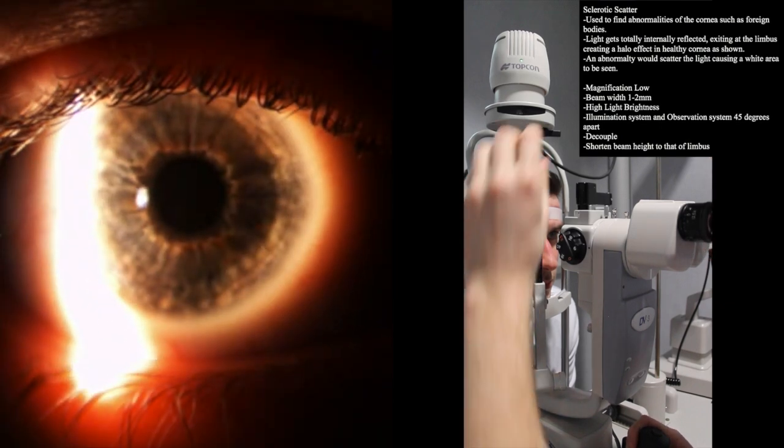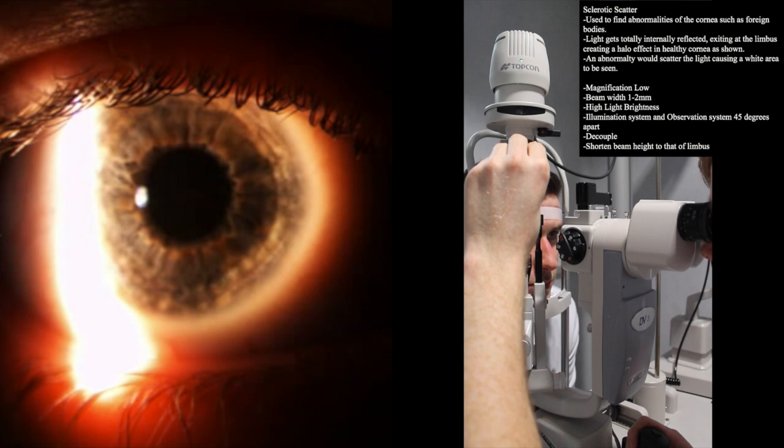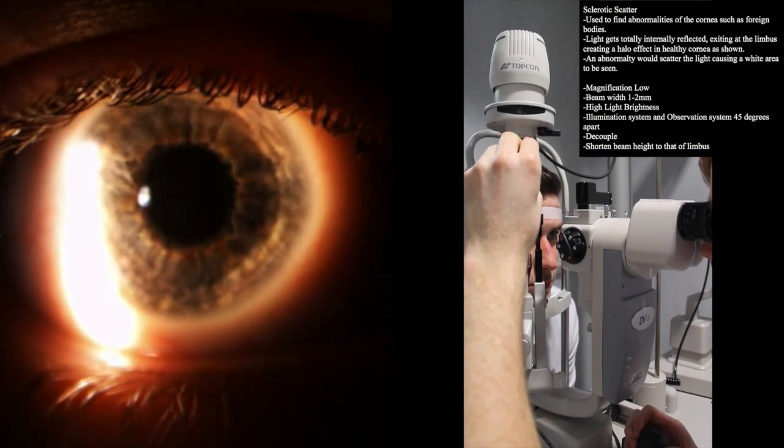Then shorten the beam height so that all of the light is in contact with the limbus, as extra light can be scattered by the sclera, reducing visibility.